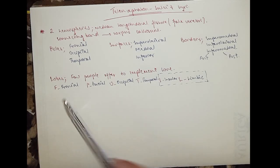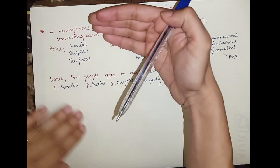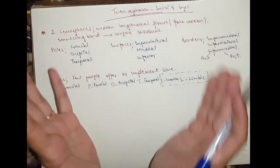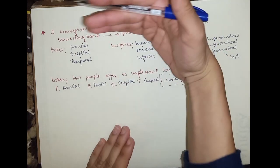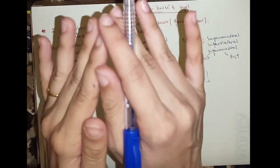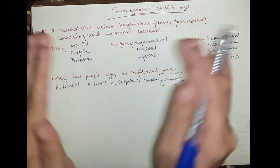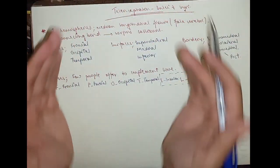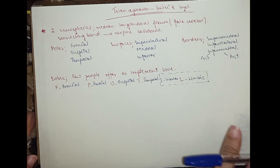You can spot the frontal — it's the front bit of the brain — then you've got the parietal bit, occipital, and temporal.